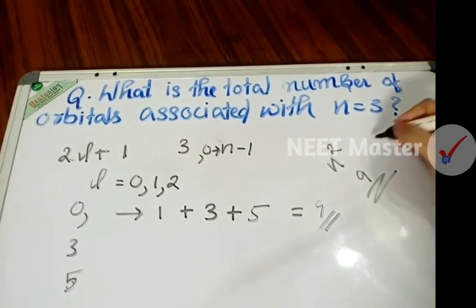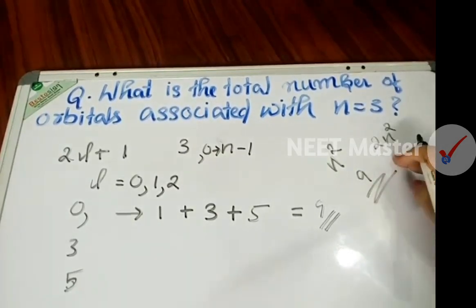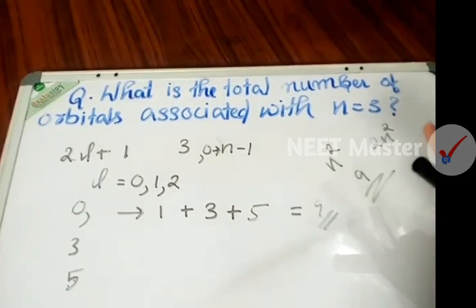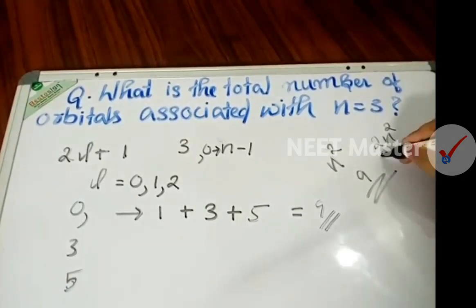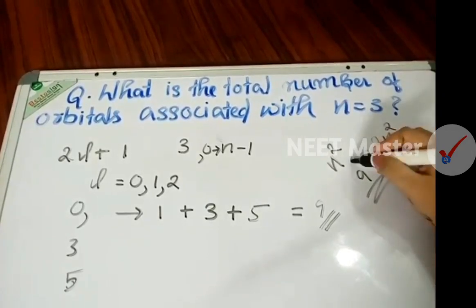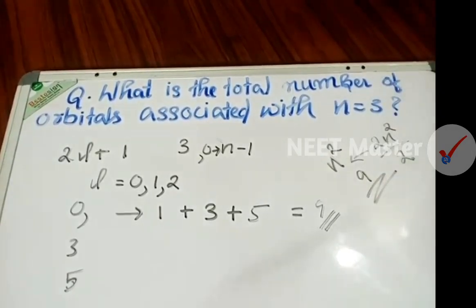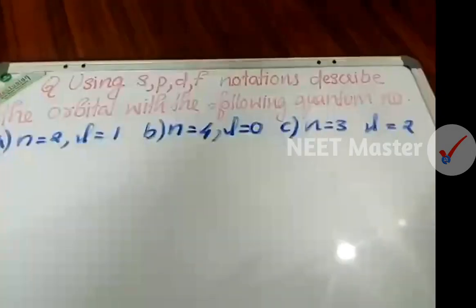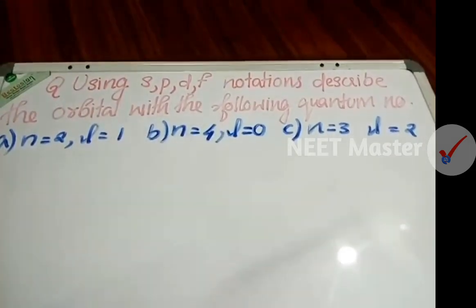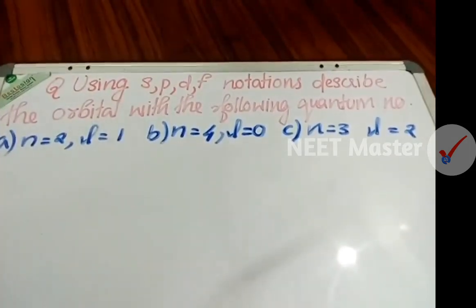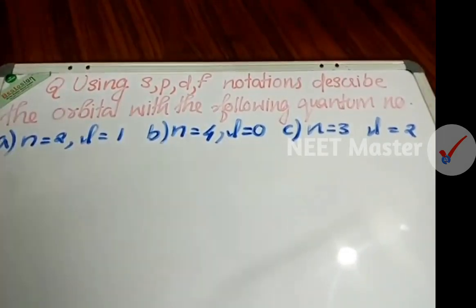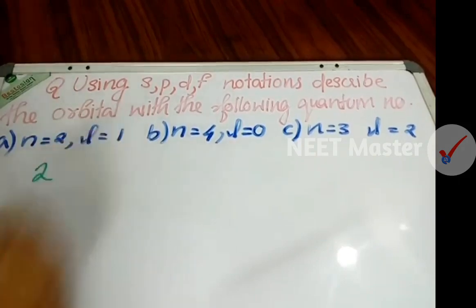We are going to study 2n² electrons in a shell. We have 2 electrons in an orbital. Using spdf notation, describe the orbital with the following quantum numbers: n=2, l=1.